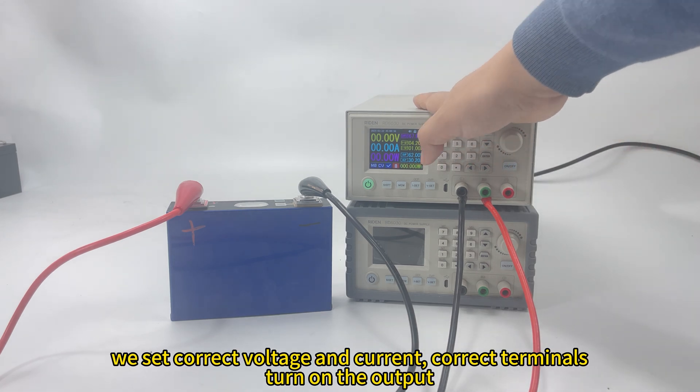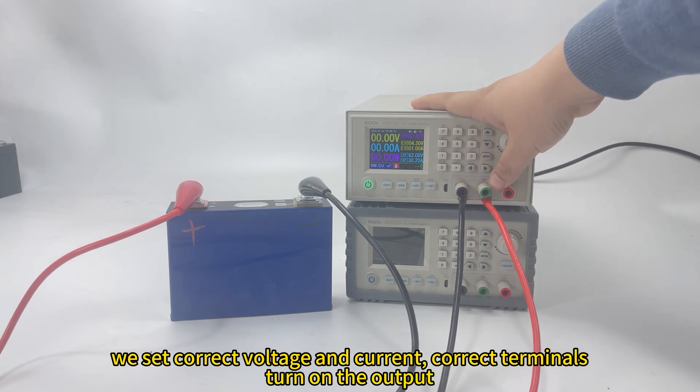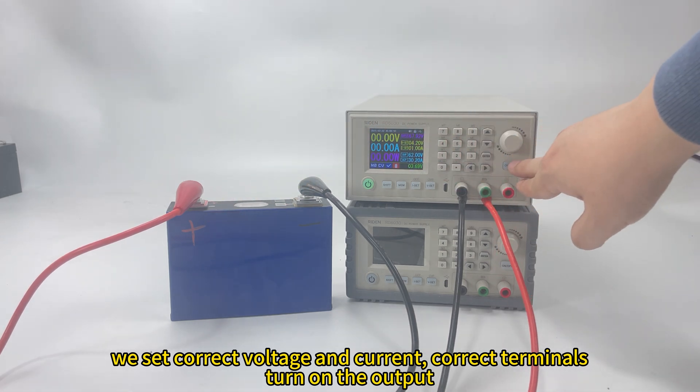We reset the connection. We reset the correct voltage and current. We use the correct terminal. And we charge the battery. Turn on the battery.